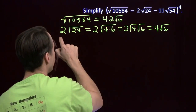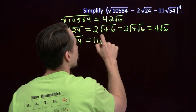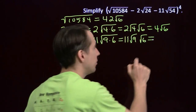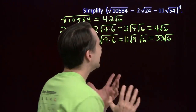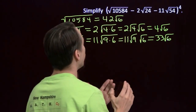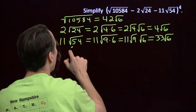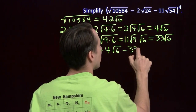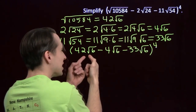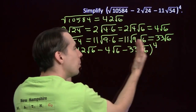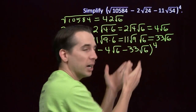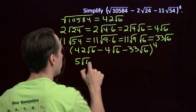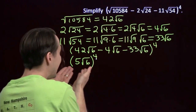And we're on to 11 times the square root of 54. Here we see 9 is an easy perfect square factor to pull out. We have 11 times the square root of 9 times the square root of 6. Square root of 9 is 3, 3 times 11 is 33. We have 33 times the square root of 6. Now we see how useful simplifying square roots can be. When we substitute these simplifications back into the expression, we see we have the same square root in each term: square root of 6, square root of 6, square root of 6. We can combine these just as if it were 42x minus 4x minus 33x. 42 minus 4 is 38, 38 minus 33 is 5 times the square root of 6. And we're raising that to the fourth power.